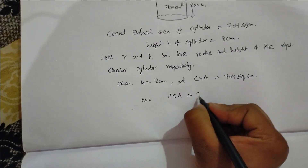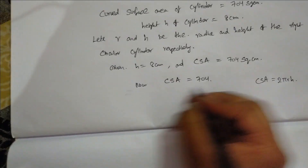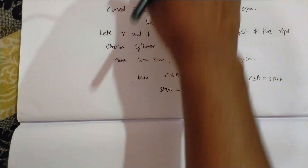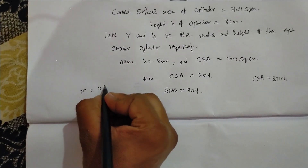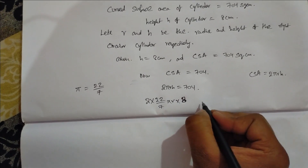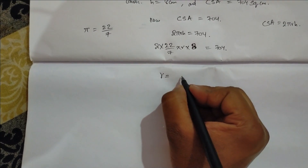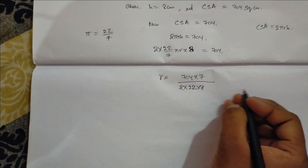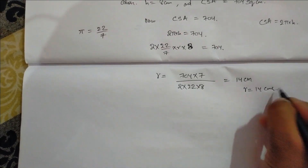The curved surface area is equal to 704 square centimeters. The curved surface area formula is 2πrh, so 2πrh = 704. When we insert the values: 2 × (22/7) × r × 8 = 704. So R is equal to 704 × 7 divided by 2 × 22 × 8. When we calculate it we get radius R equal to 4 centimeters.